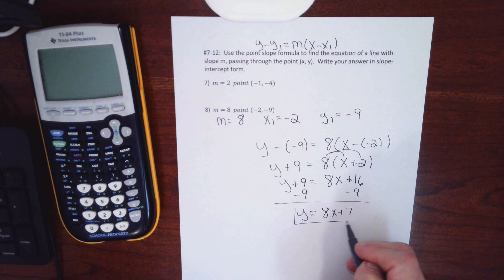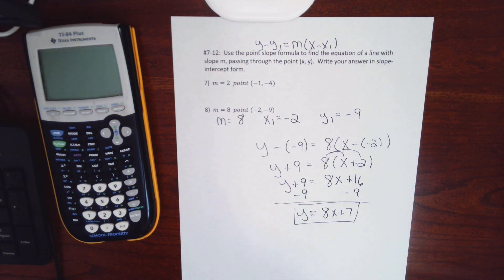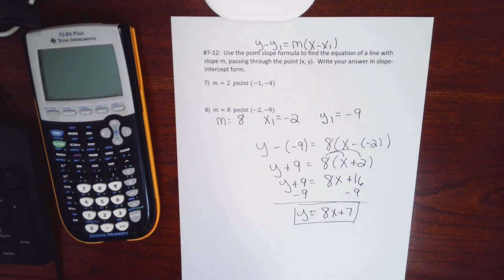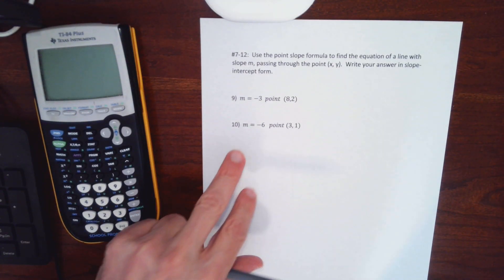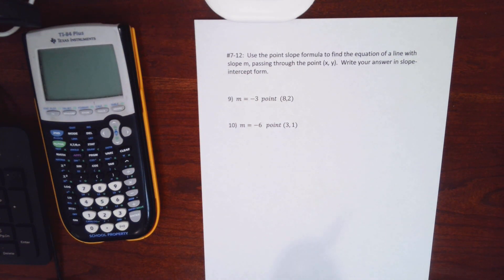The point-slope formula takes you straight from given information to the answer without having to generate intermediate numbers and plug them back in separately. Students generally make fewer mistakes because the algebra forces the answer into the right form. That's why I prefer this method — though my nephew, a student at GCC this semester, prefers the slope-intercept approach. Most instructors will show the point-slope method.